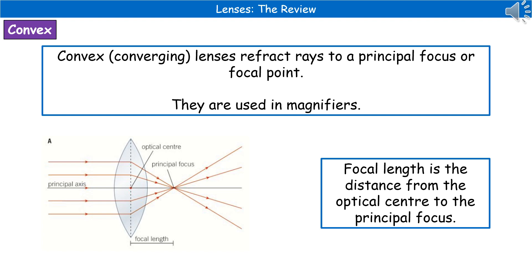If you have a look at the diagram in the bottom left, you can see that we've got our lens in the centre. Then we've got our rays of light coming in from the left-hand side, and you can see that they're all refracted — so they're bent — and they come to that clear point, the principal focus. When we're talking about the focal length with our convex lenses, it is the distance from the optical centre, right in the middle of the lens on the principal axis, to the principal focus.